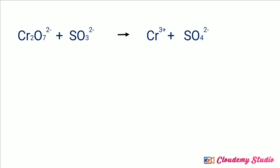Oxygen — its oxidation number is minus 2. This is the familiar rule: oxygen usually has an oxidation number of minus 2. So first of all, we write the oxidation number of oxygen as minus 2.